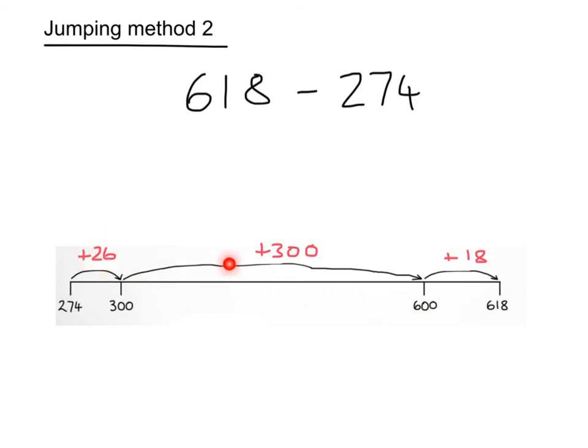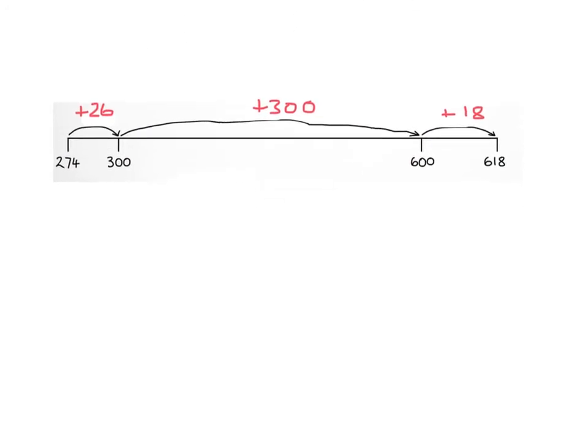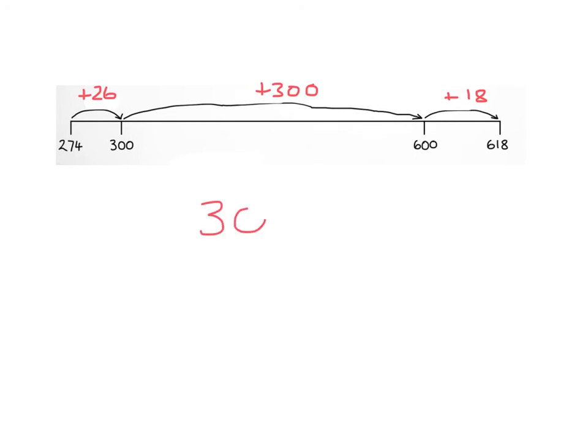So basically I'm saying that I've got 26, 300, and 18 added all together. So what I need to do now is I need to add all of those numbers up. So adding those together, I get 326 and 18. Now I've made sure that I've kept things in the right columns, units, tens, hundreds.